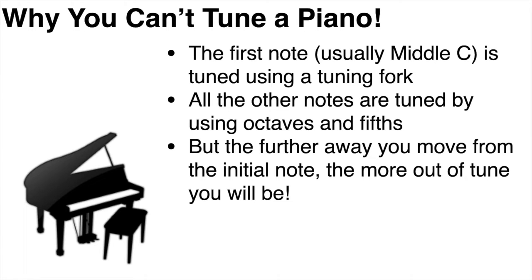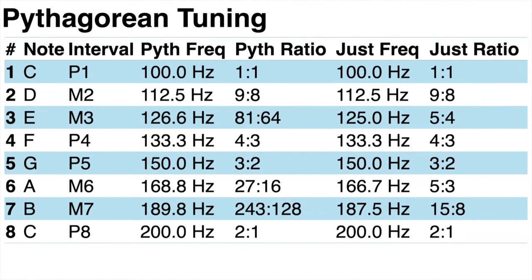The Pythagorean comma is the small amount of overlap at the end of the circle of fifths. Mathematically, the Pythagorean comma has a ratio of 531,441 to 524,288. And this is the reason you can't tune a piano. Before electric tuners, pianos were tuned by ear — you would tune a single note using a tuning fork, then tune up and down by octaves and fifths until you covered every note. But the further away you move from your starting point, the more out of tune you get. So we see that Pythagorean tuning is not internally consistent: we expected to go around the circle of fifths and return to the same note, but we didn't.